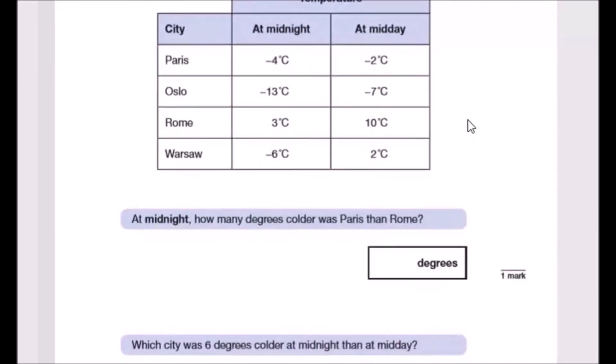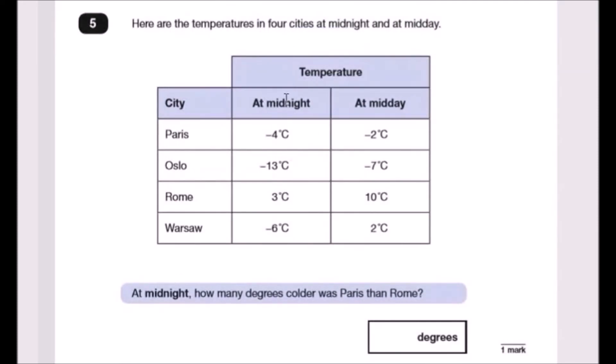Now let's check our next one. At midnight, so we're looking at the midnight values, how many degrees colder was Paris than Rome? So Paris was minus four and Rome was three. So what I do is draw a number line, so I've got minus four on the negative side and positive three because remember this is a positive value. So this is a plus three. We just count the difference.